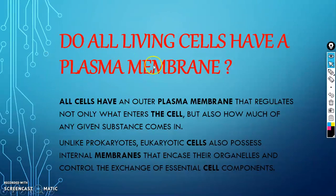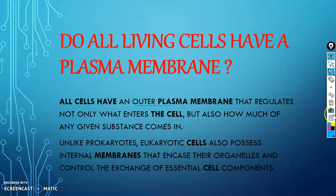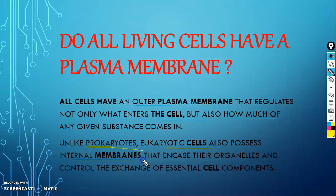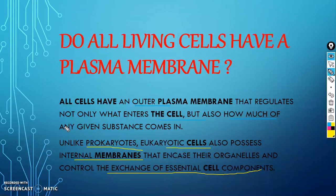My first question was: do all cells have a plasma membrane? All cells have an outer plasma membrane that regulates not only what enters the cell but also how much of any substance comes in — it controls which molecules go inside or not. Unlike prokaryotes, eukaryotic cells also possess internal membranes associated with organelles and control the exchange of essential cell components.